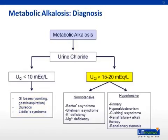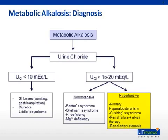If the urine chloride is high, then the next step is to determine the volume status of the patient. If the patient is normotensive, the etiology of metabolic alkalosis is due to either Bartter syndrome, Gitelman syndrome, or electrolyte abnormalities like hypokalemia or hypomagnesemia. If the patient is hypertensive, then the possibilities include primary hyperaldosteronism, Cushing syndrome, or renal artery stenosis.